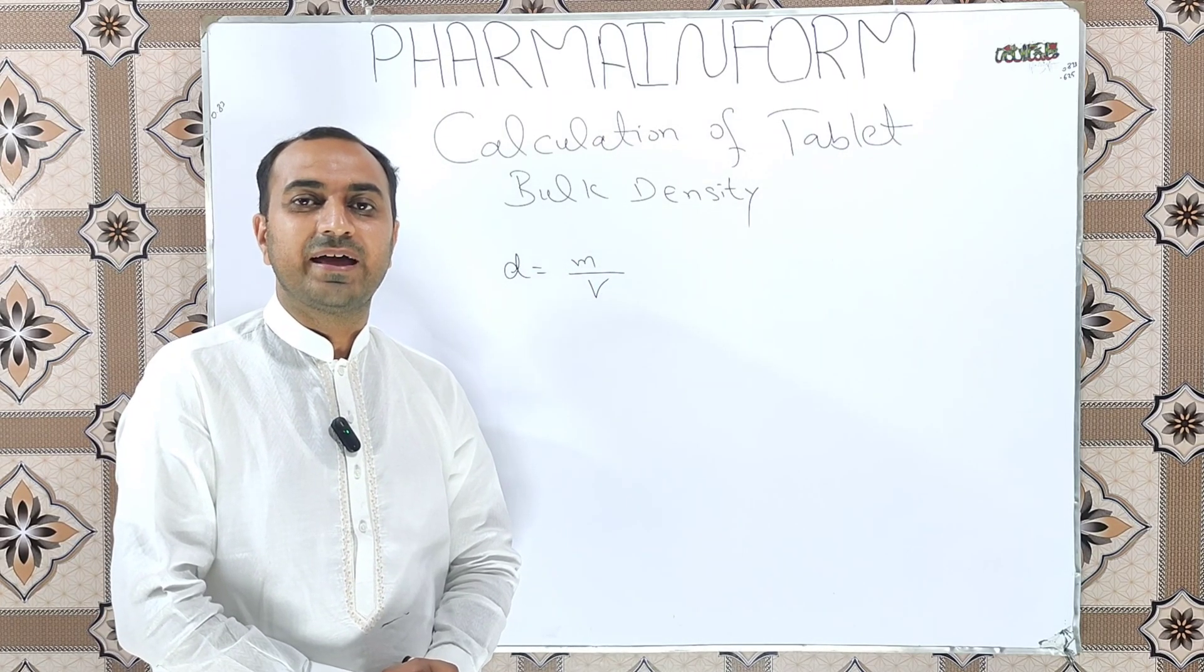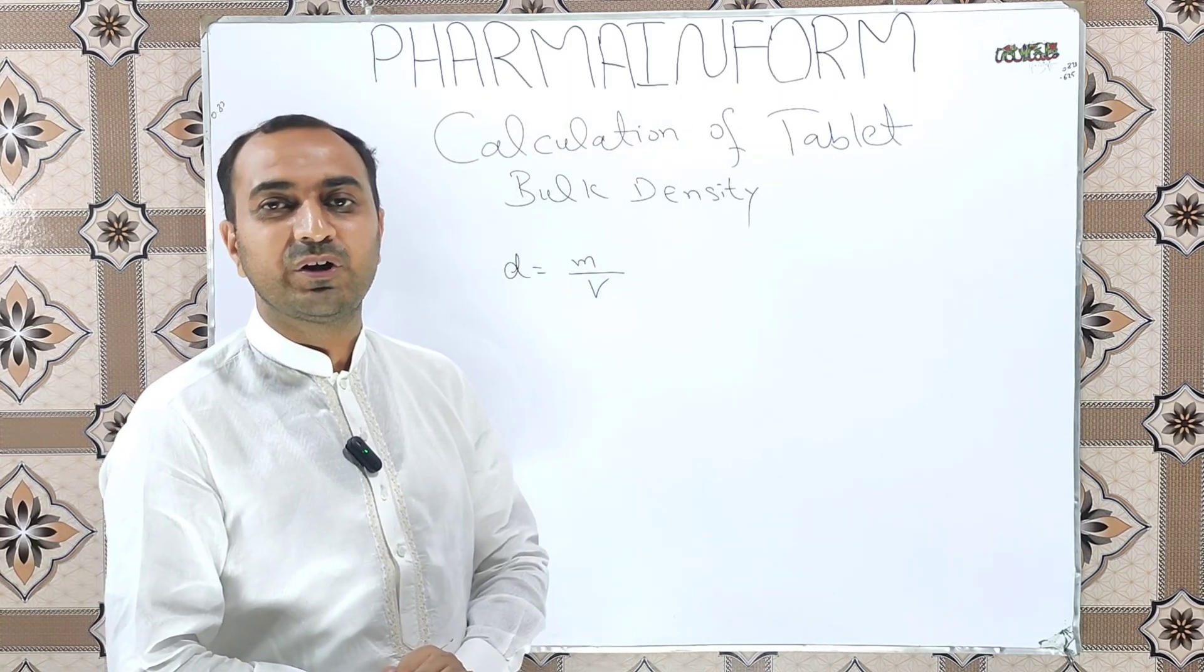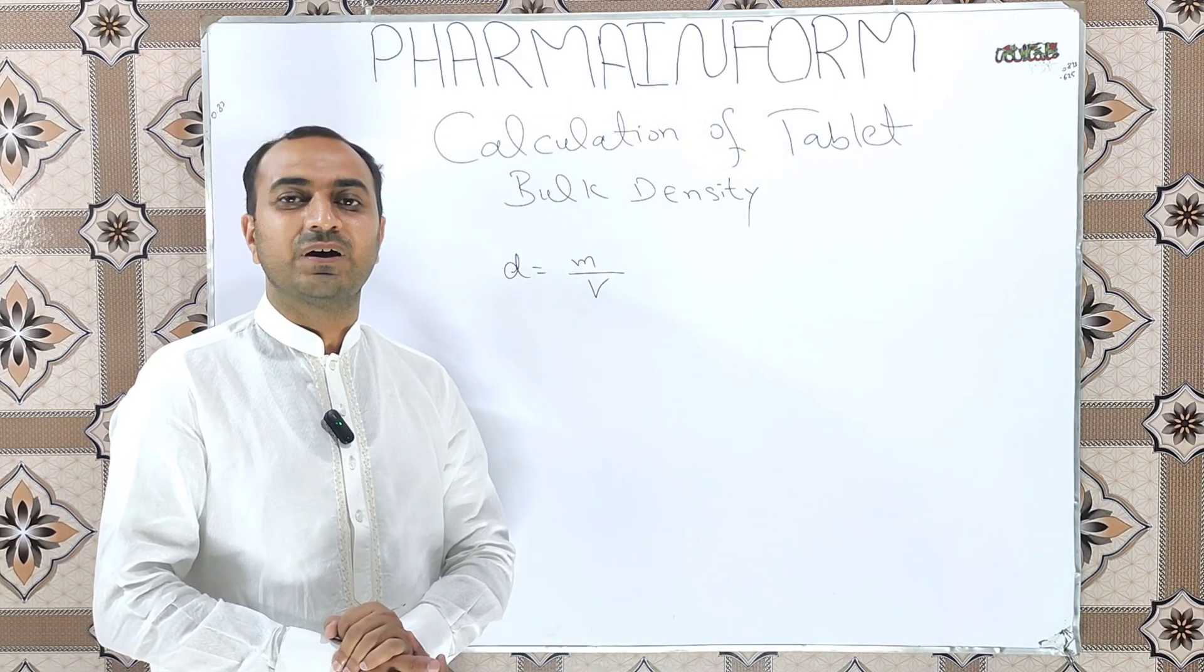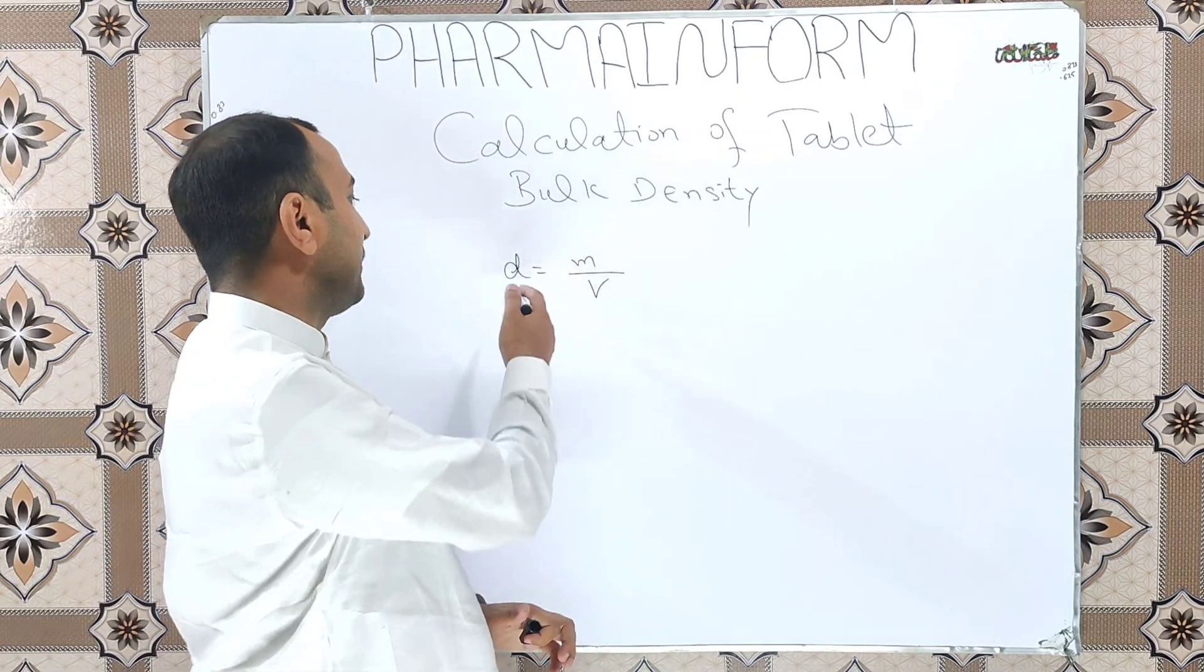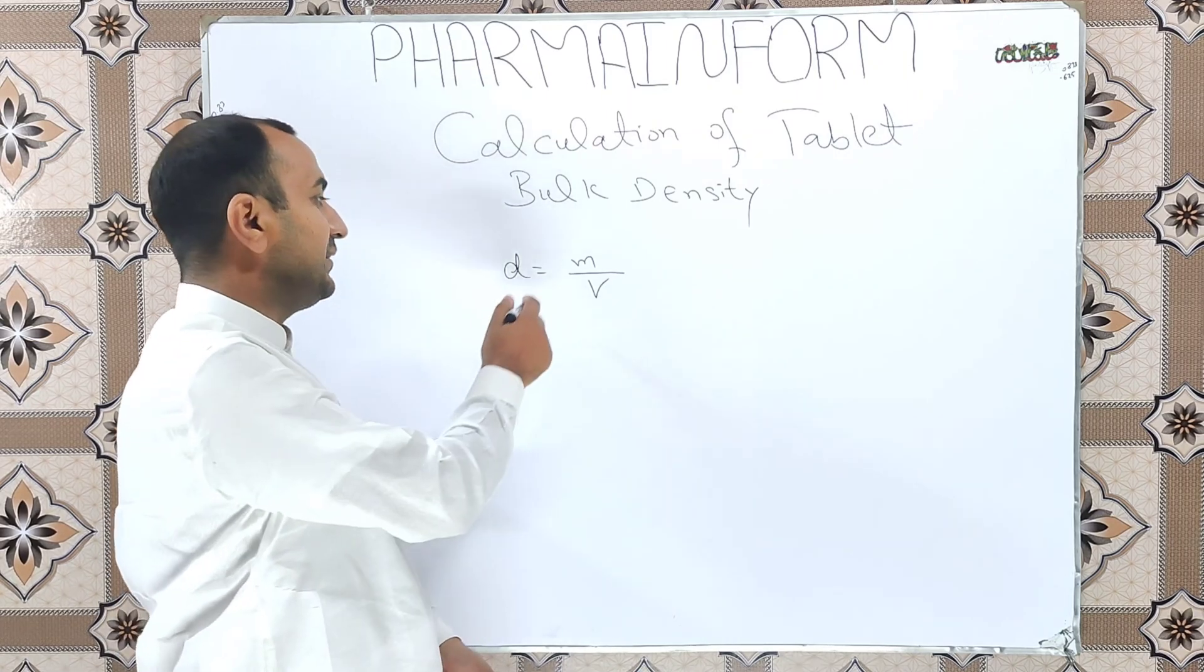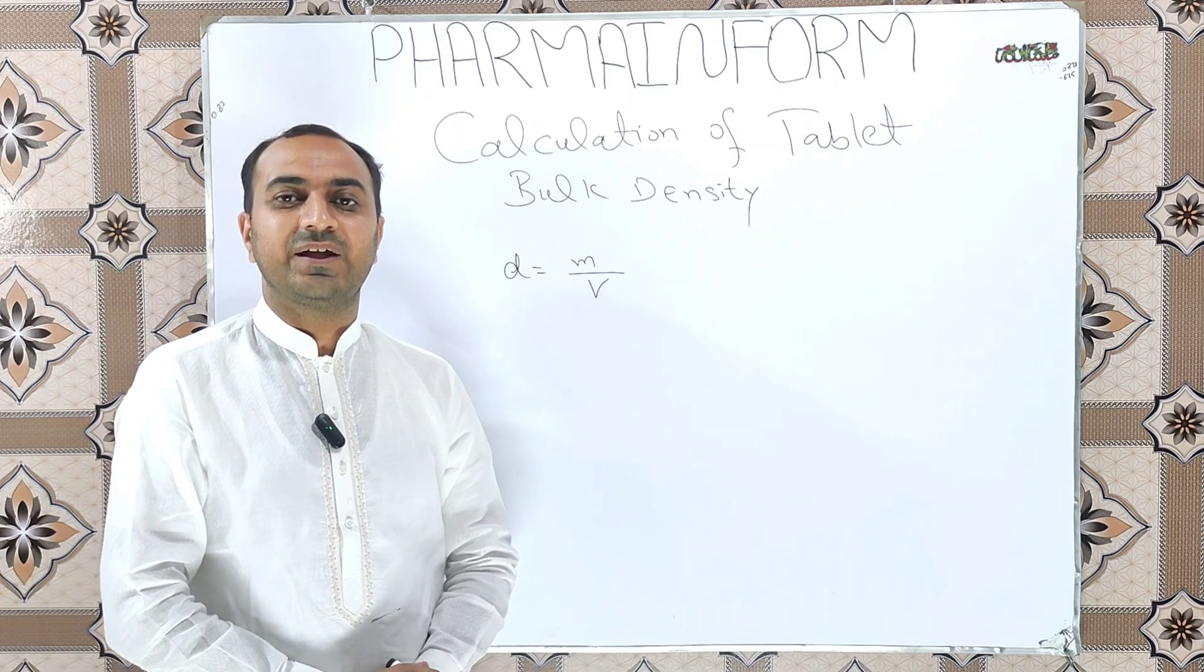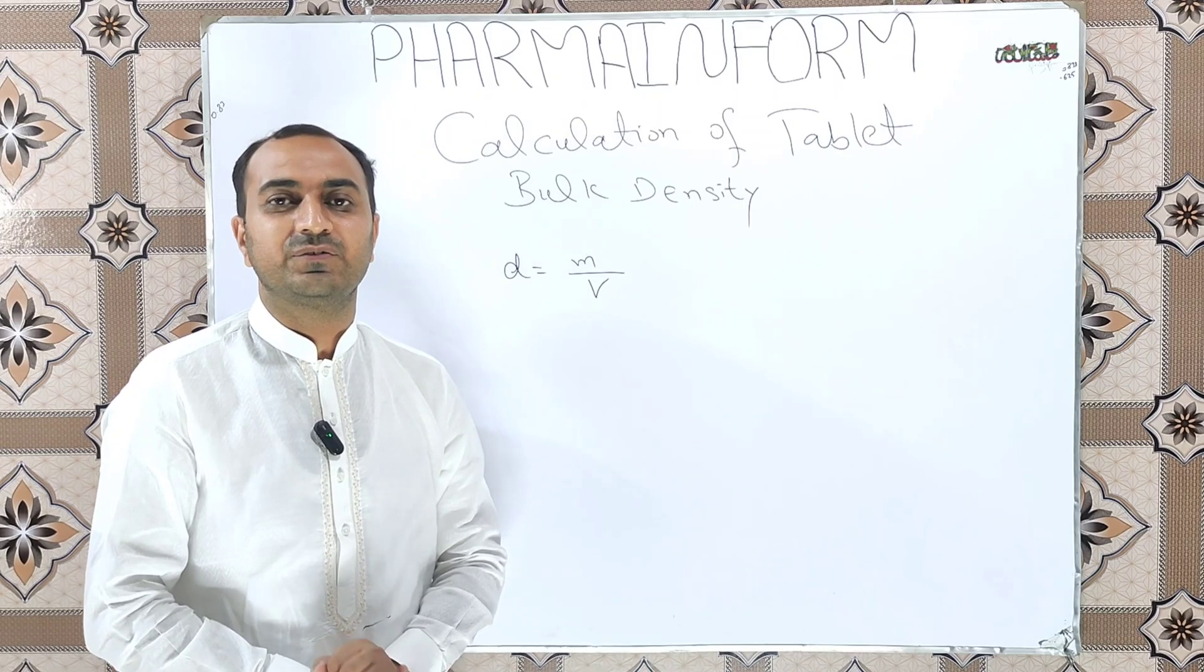To determine how much weight of tablets can be coated in a tablet coating pan, we have to calculate the bulk density of the tablets. Let's start. As you are familiar, the formula of bulk density is D equals M over V. M is mass and V is volume. To calculate this we need two things: weight and volume.